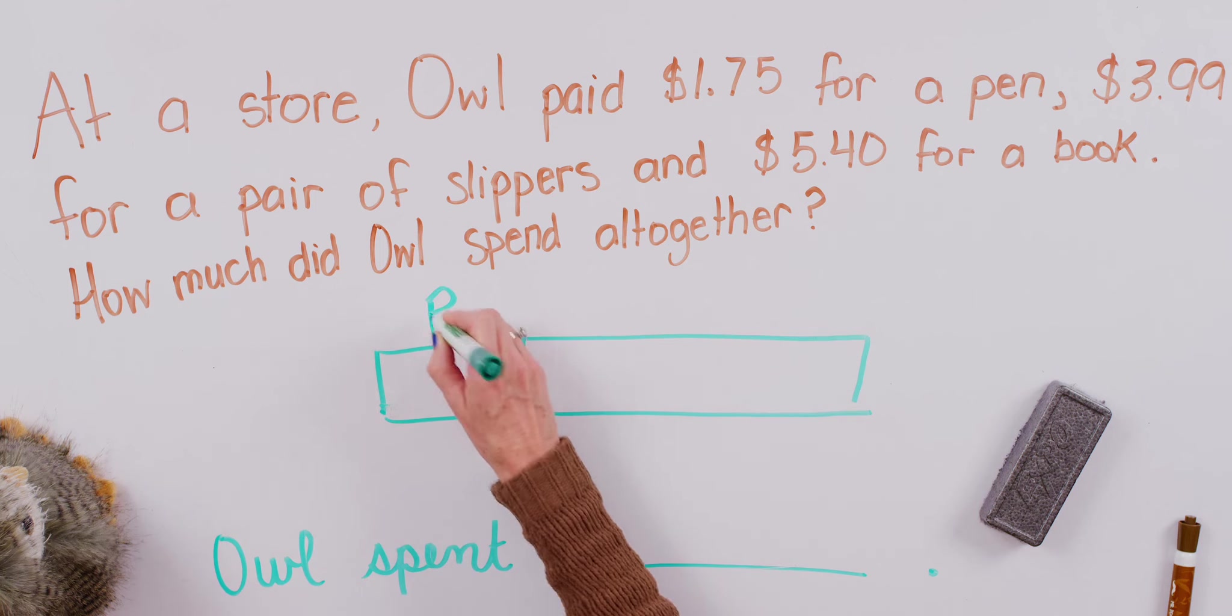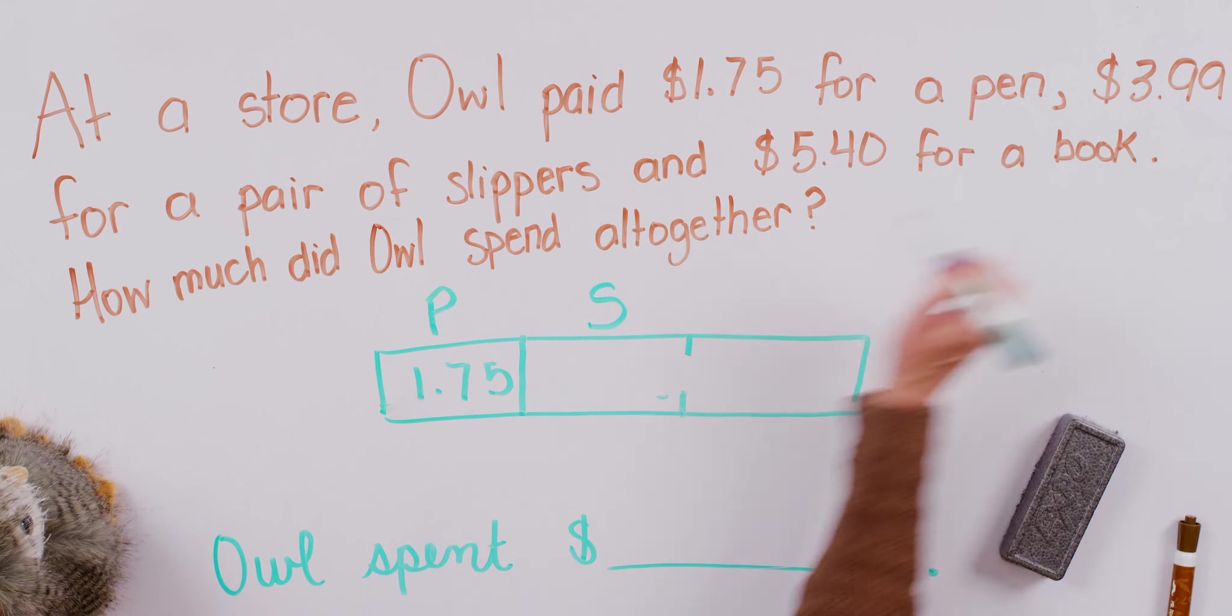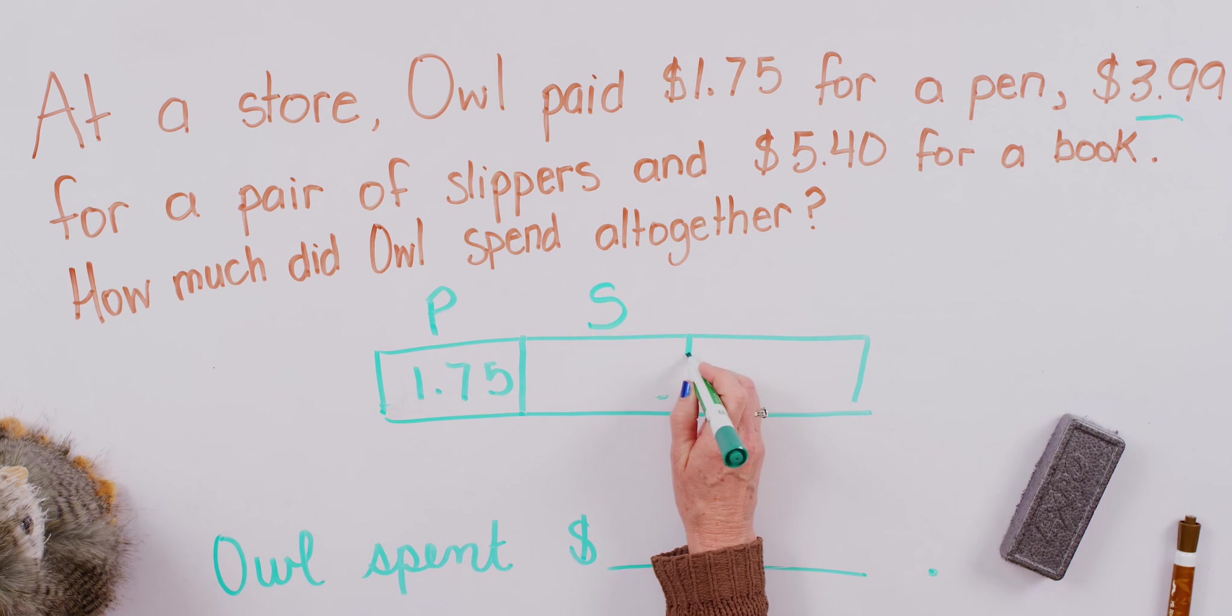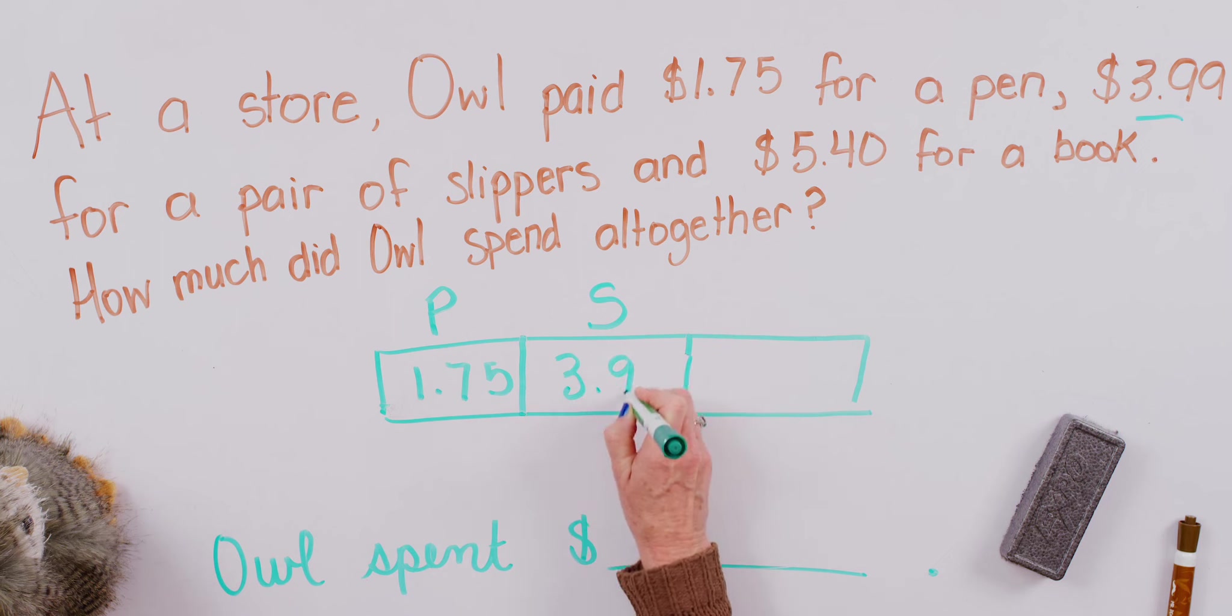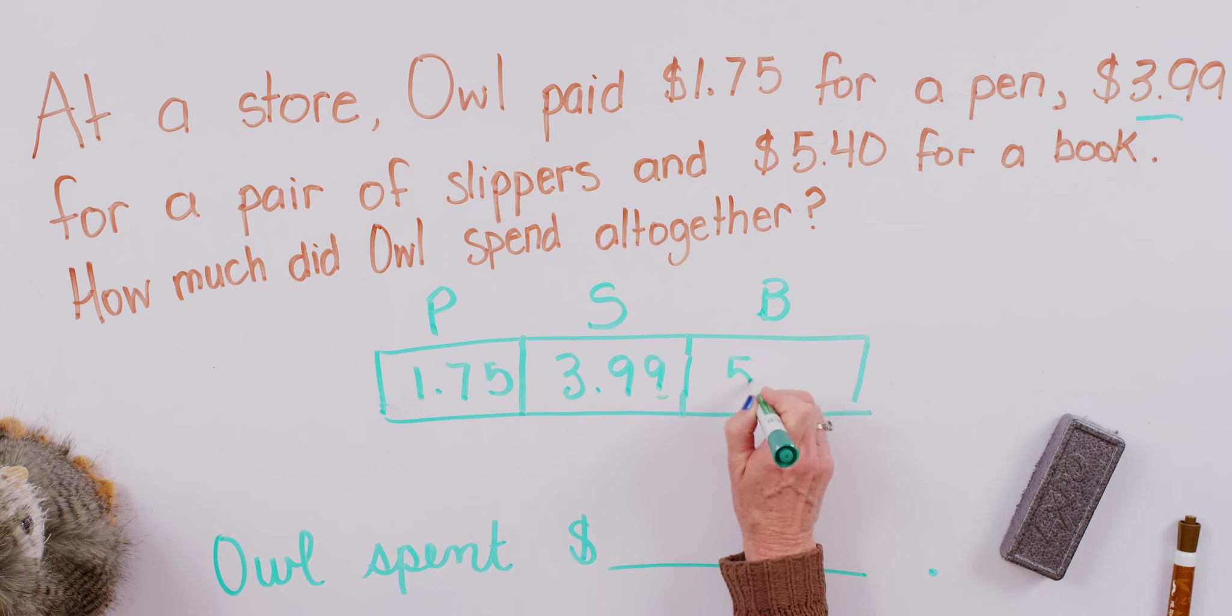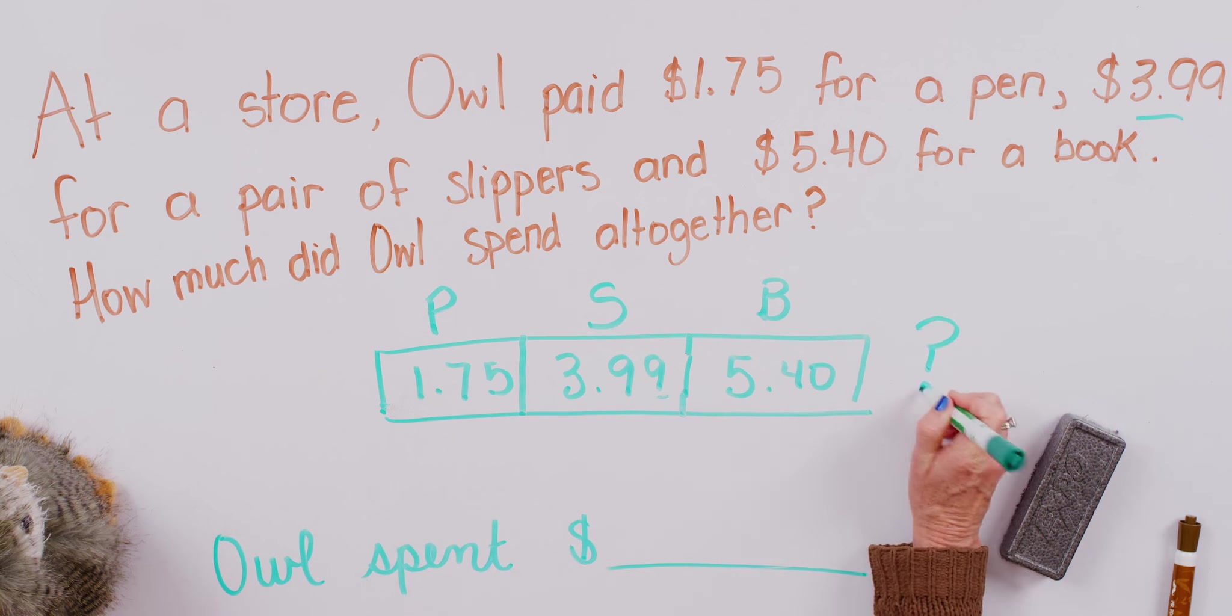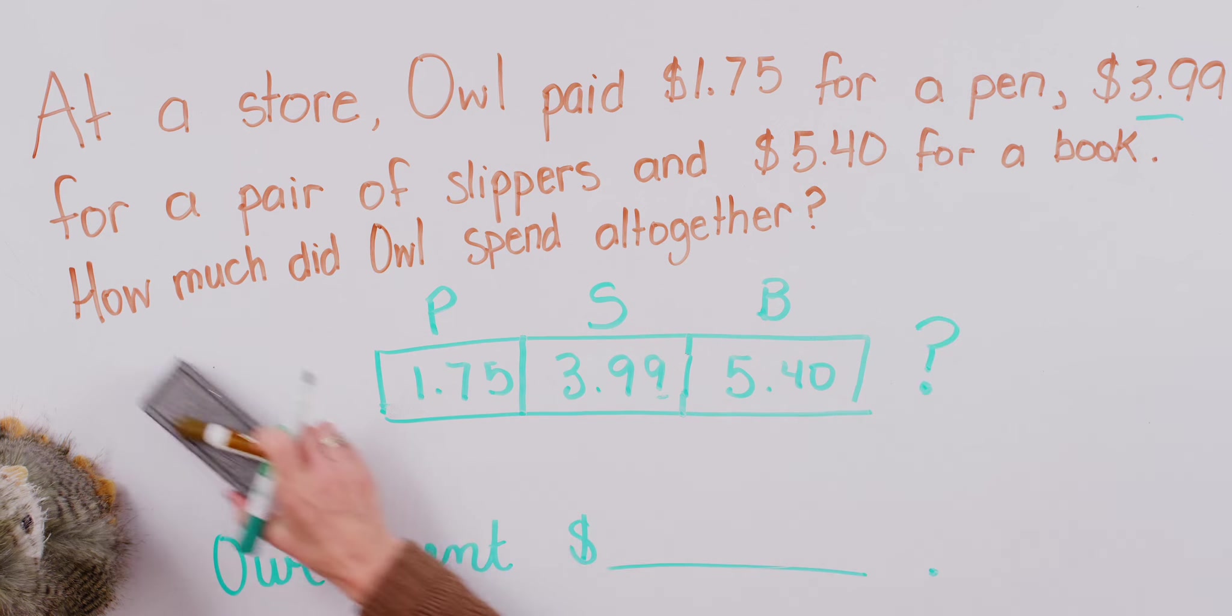So let's, this will be the pen, and that was $1.75. You can see I'm dropping the dollar sign for the convenience of the space and all that. And we have a pair of slippers, and the slippers cost $3.99, so we'll just say $3.99. And then we've got a book, and the book was $5.40. So in a sense, this number story is a part, part, whole problem. It just happens that there are three parts, and we want to know the total at the end. So can you see how we can solve for this? That's right, we just have to do some addition.